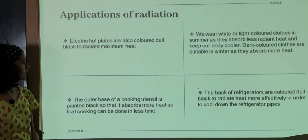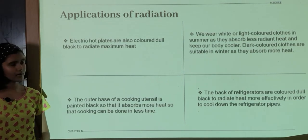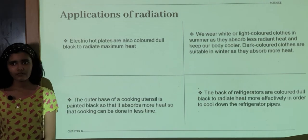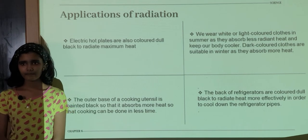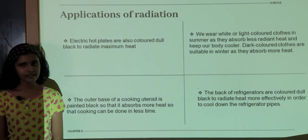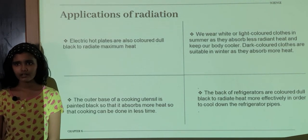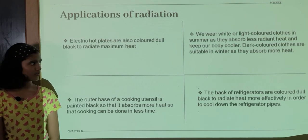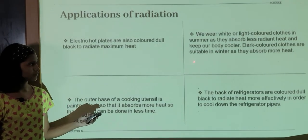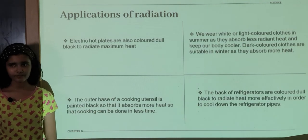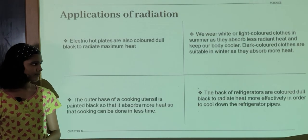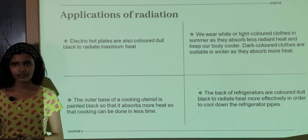Application of Radiation. Electric hot plates are colored dull black to radiate maximum heat. The outer base of a cooking vessel is colored black so that cooking can be done in less time. We should wear white or light colored clothes in summer, as white or light colored clothes absorb less radiant heat. At the back of refrigerators, it is colored dull black so that more heat is radiated away.